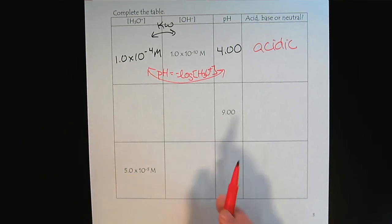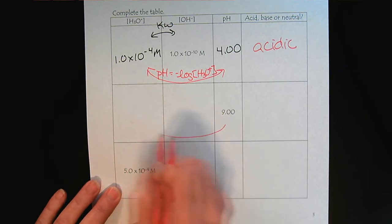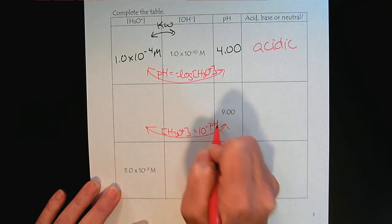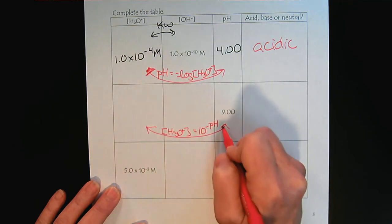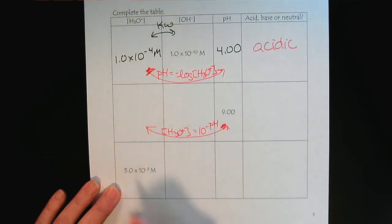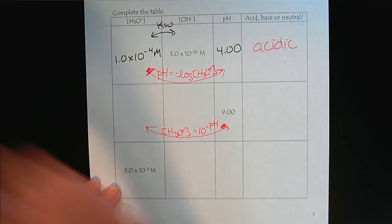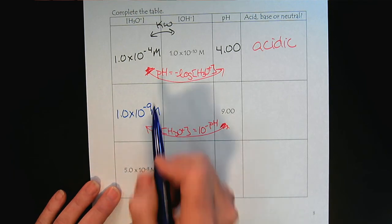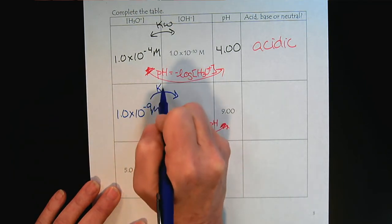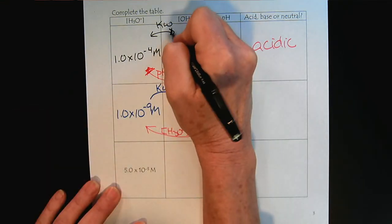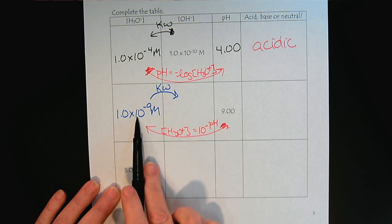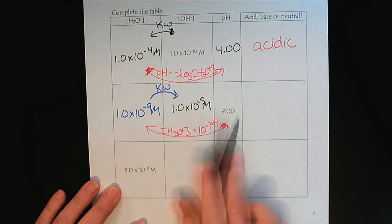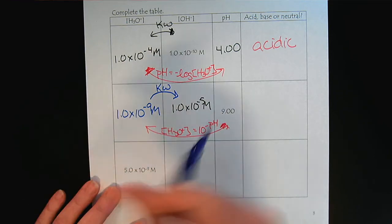For this next example, we have the pH. So this time, we will use that the hydronium ion concentration is 10 to the minus pH. So this information gives us that, so the pH we can calculate here. And so we will get 1.0 times 10 to the minus 9 molar for the hydronium concentration. And once we have that, then we can use the Kw. So my arrows were a little funky here. So from the pH, we get the hydronium. From the hydronium, we can get the hydroxide. And then this one we already know. The pH is greater than 7. Basic.